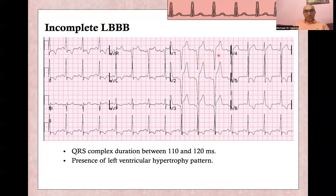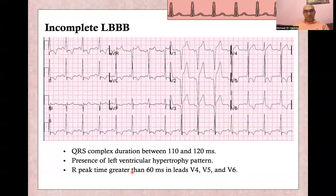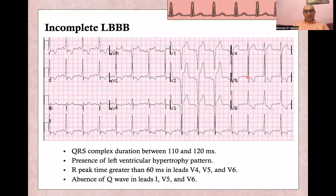If you calculate the voltage criteria, you will find voltage criteria for QRS. The R wave peak time is also greater than 60 milliseconds — if you calculate it in V4, V5, or V6, it will be more than 60 milliseconds. And of course, there are no Q waves in lateral leads.